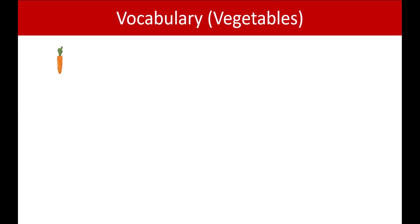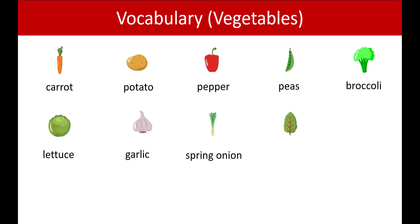We're going to learn carrot, potato, pepper, peas, broccoli, lettuce, garlic, spring onion, spinach, beetroot, turnip, cauliflower, corn, tomato, and asparagus.